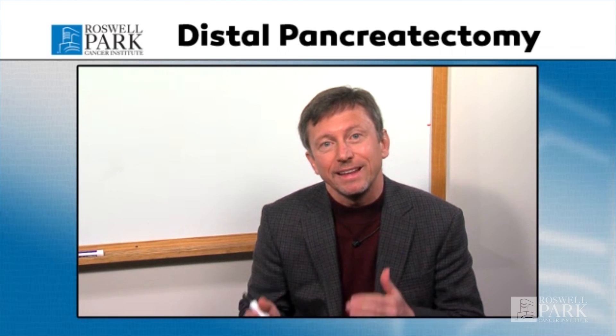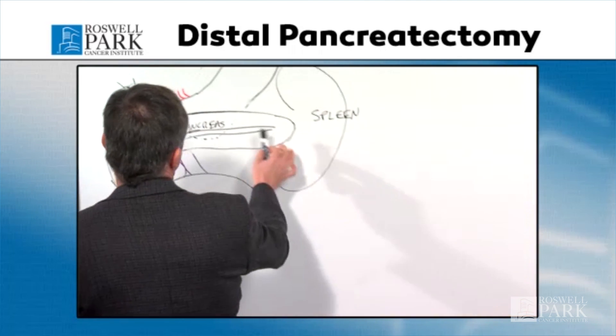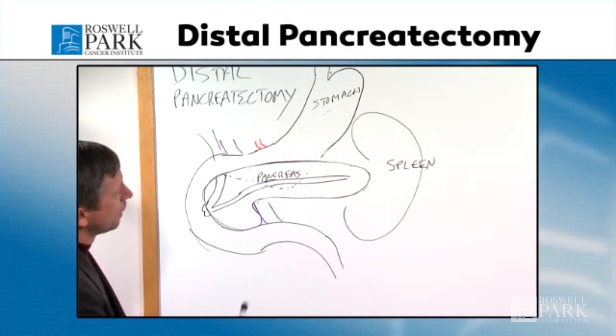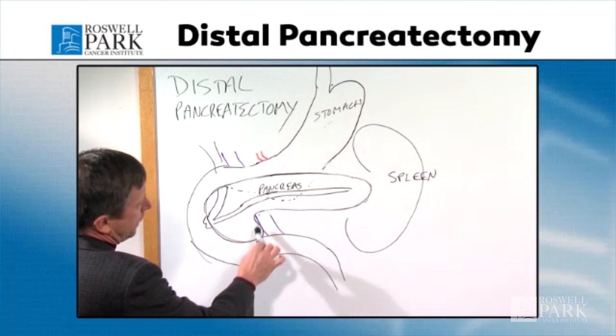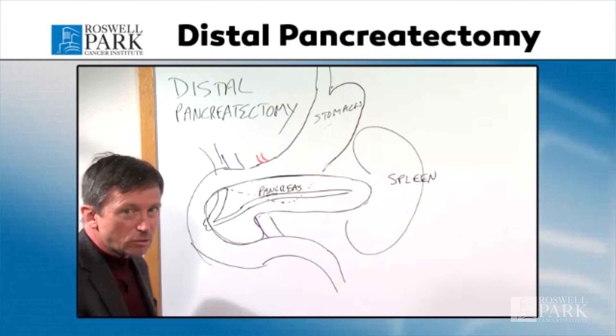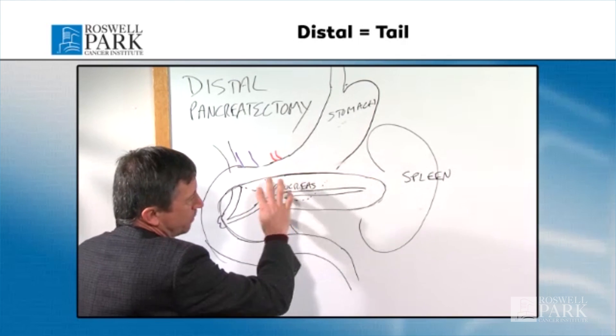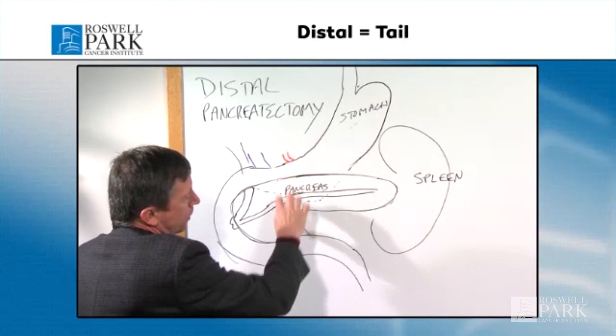I'd like to spend a few minutes talking about a common procedure we perform here at the liver and pancreas tumor center called a distal pancreatectomy. Distal pancreatectomy is a procedure where you remove the left side of the pancreas, and that can be done for a number of different reasons. I'd like to show you this picture that I drew of the pancreas. As you see here, the distal pancreas — which is the tail of the pancreas — is in this area here.